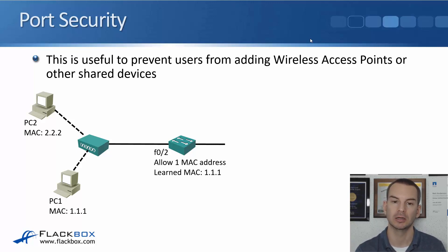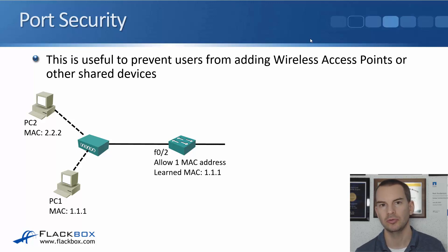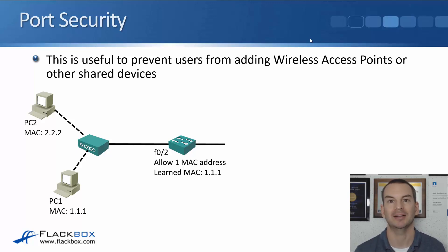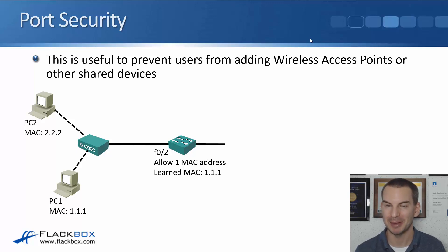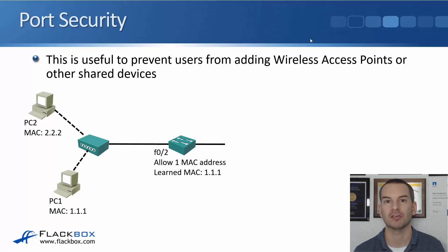We've got the switch on FastEthernet 0/2 with port security enabled, allowing one MAC address — it learned 1.1.1. Then a user says there aren't enough wall ports, so they take a wireless access point from home and plug it into the port. This is a big problem because a user won't configure the correct security settings. Maybe that part of the building is right next to the car park, and they put a wireless access point in with unrestricted access — now anybody can pull up into your car park and get onto your network. That's a huge security concern.